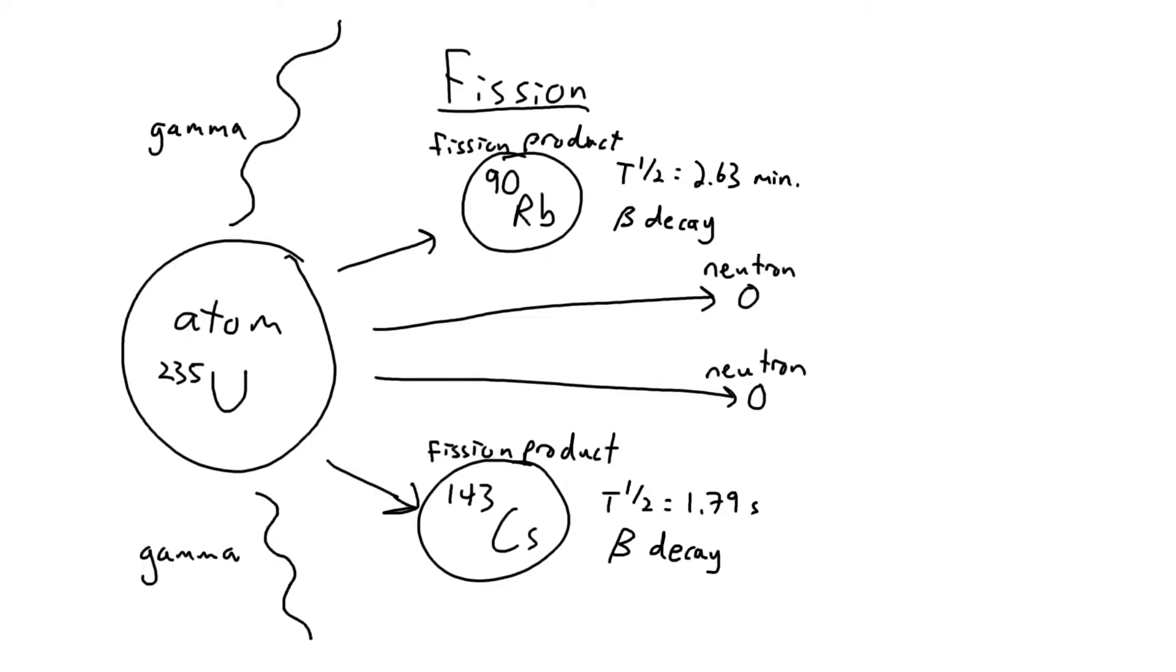The exact number of neutrons from any one fission is variable, but for a specific isotope, it averages out to a well-known and predictable value, much like how half-life is well-known and predictable for any given radionuclide. For example, uranium-235 averages around 2.4 neutrons per fission, while plutonium-239 averages around 2.9.